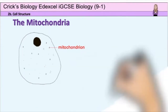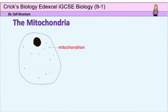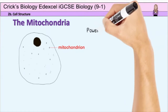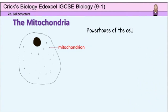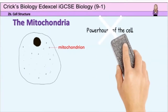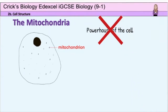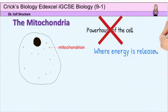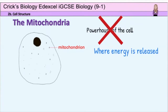The mitochondria — this is the plural name, one is called a mitochondrion — are sometimes called the powerhouse of the cell. Please do not write this down in an exam, as this is not a scientific answer. The reason people sometimes say this is that the mitochondria are where most of the respiration occurs. Respiration is the release of energy from food, most commonly from glucose. So in an exam if asked what the job of the mitochondria is, they are the site of respiration.